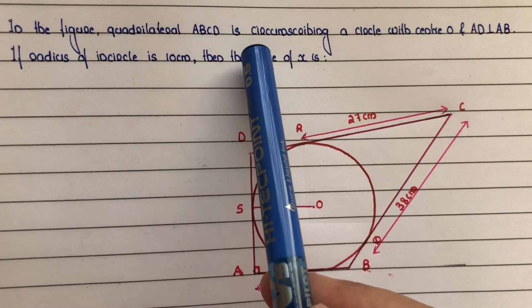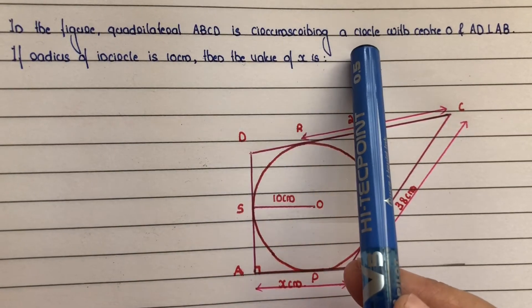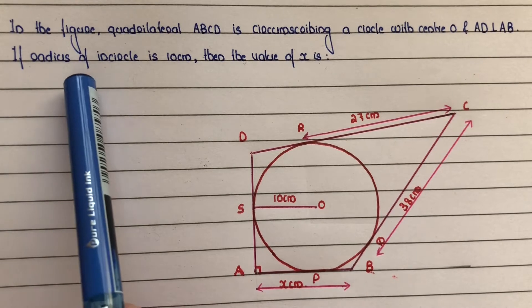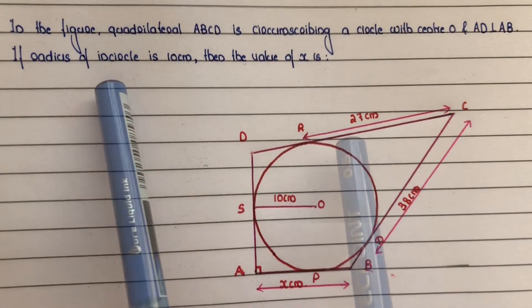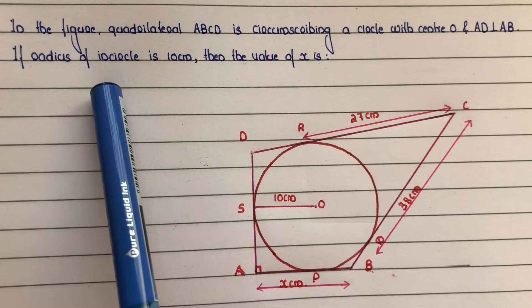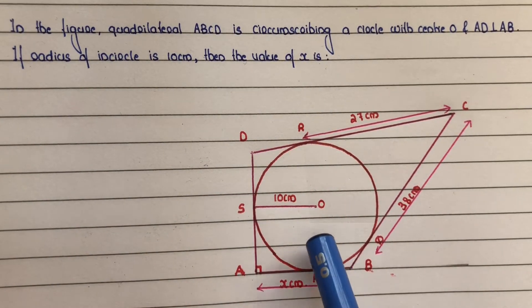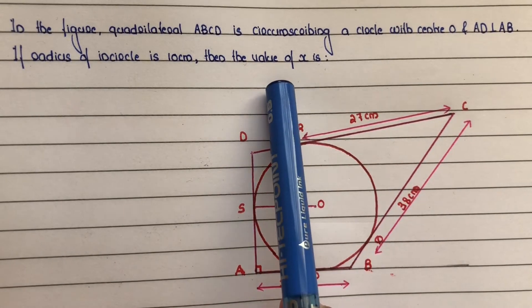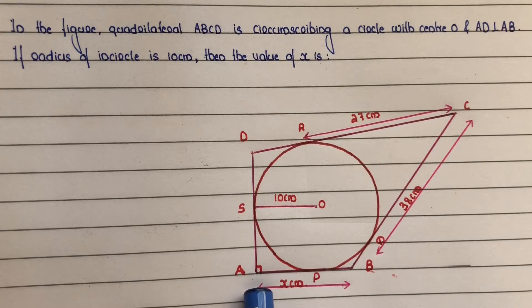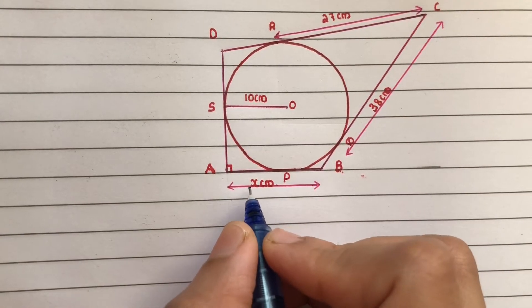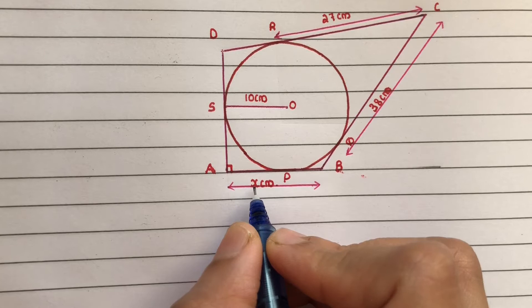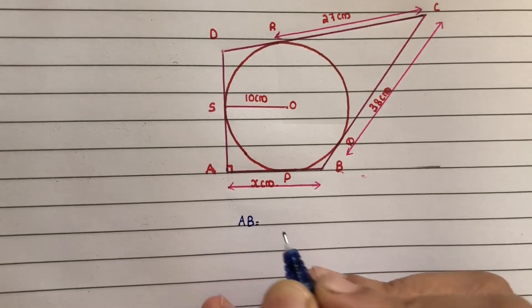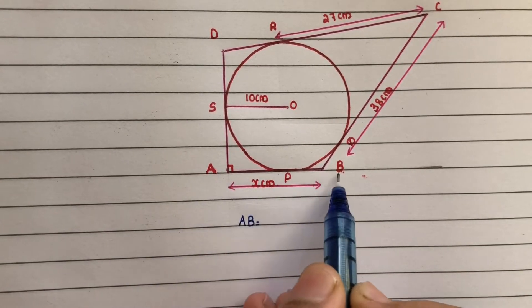Quadrilateral ABCD is circumscribing a circle with center O, and AD is perpendicular to AB. The radius of the inscribed circle is given as 10 cm. The question is to find the value of X, which is the length of AB. We know AB is equal to AP plus PB.